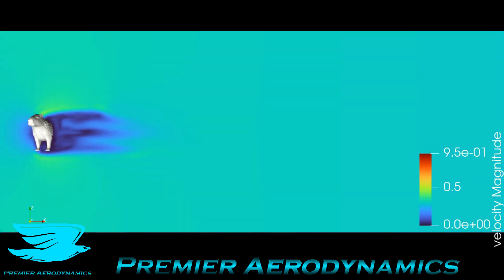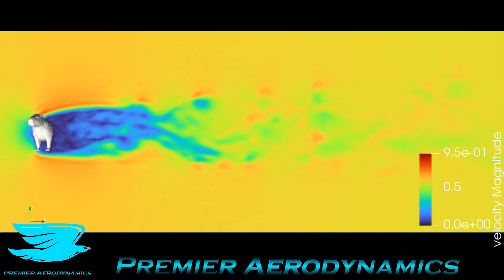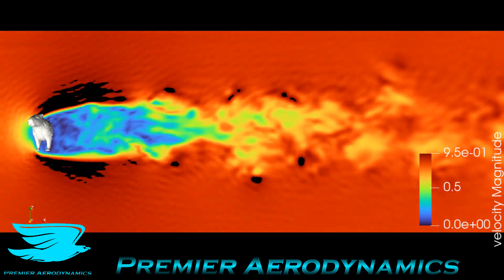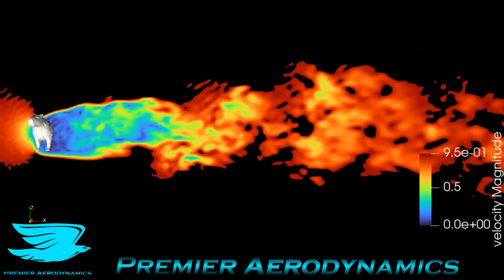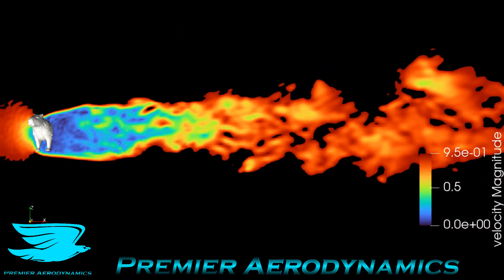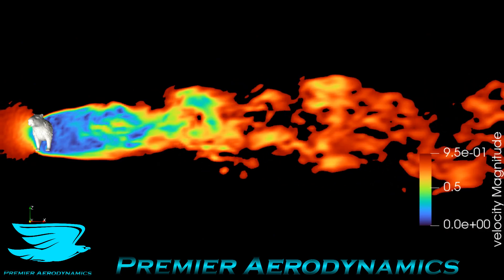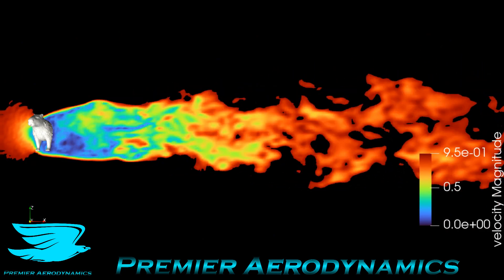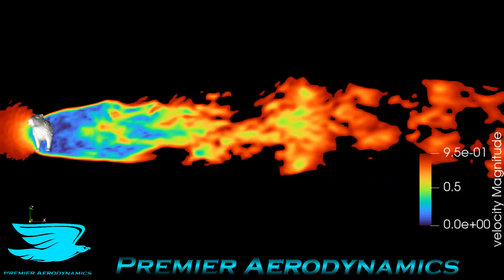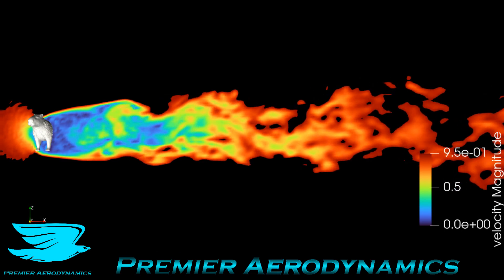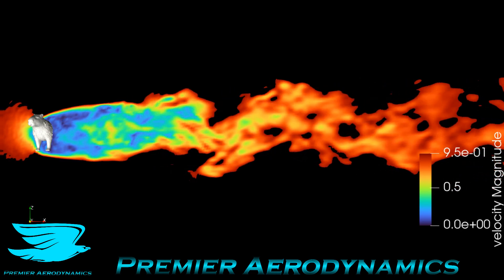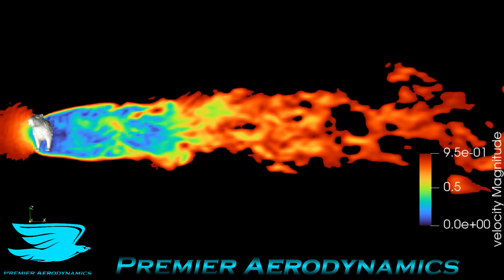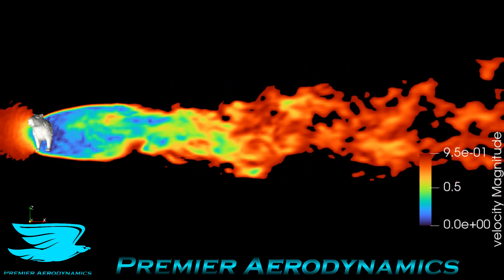Now we have a y-plane going through the middle of the capybara, colored in velocity magnitude, so we can really only see the wake. This is where we can see just how big the wake is — look at how many capybaras downstream it goes before it starts to break down. It's like five or six capybara widths downstream.